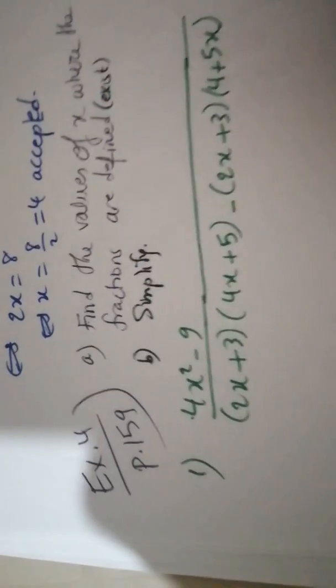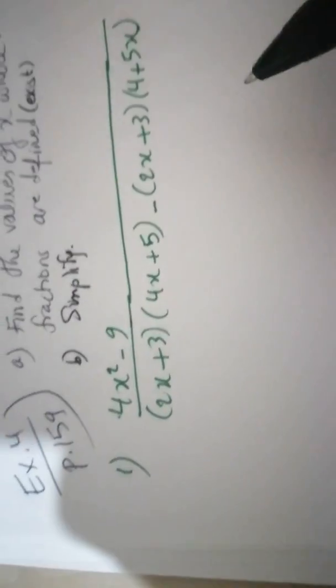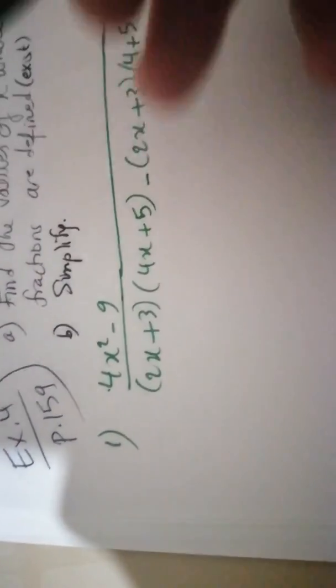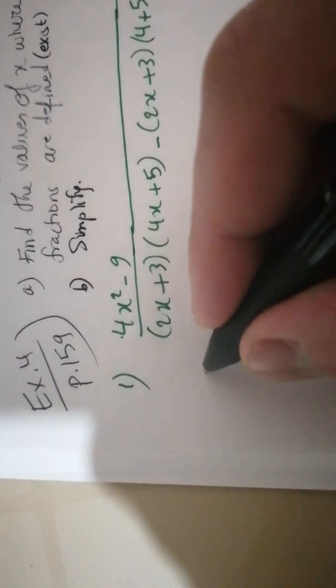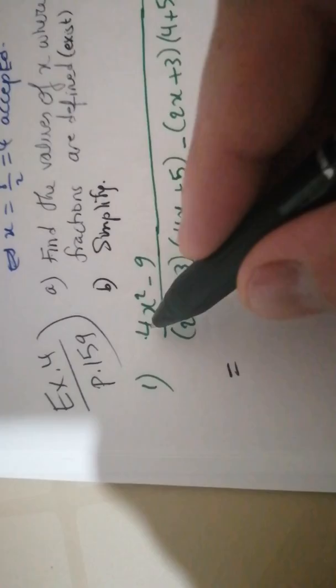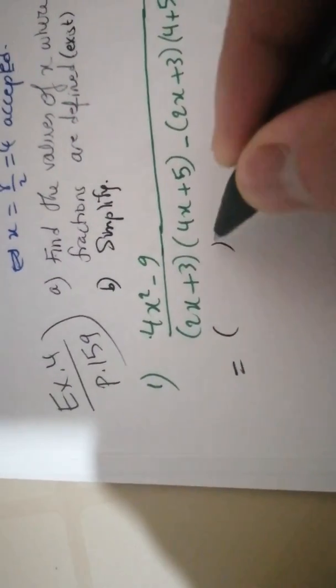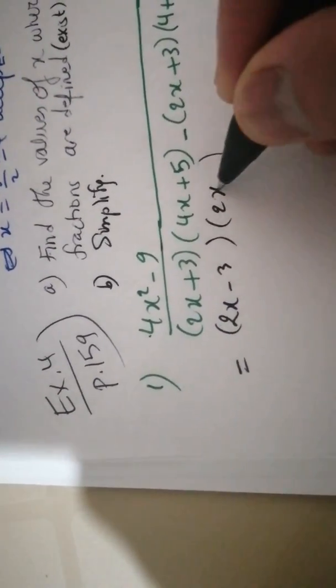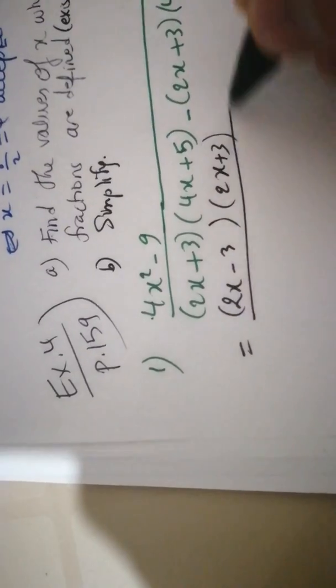The second part is to simplify. This is the first fraction. First of all, we have to factorize the numerator and the denominator where possible. Now, 4x squared minus 9 — we can factorize it because it is (2x) squared minus 3 squared. So it becomes (2x minus 3)(2x plus 3) over...